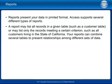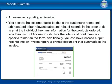Reports present your data in printed format. Access supports several different types of reports. A report may list all records in a table, such as a customer table, or only records meeting a certain criterion, such as all customers in California. Reports can combine several tables to present relationships among different sets of data. For example, printing an invoice accesses the customer table for name and address, and the order table for individual line item information. Access calculates totals and prints them in a specific format, and can output records onto an invoice report — a printed document that summarizes the invoice.